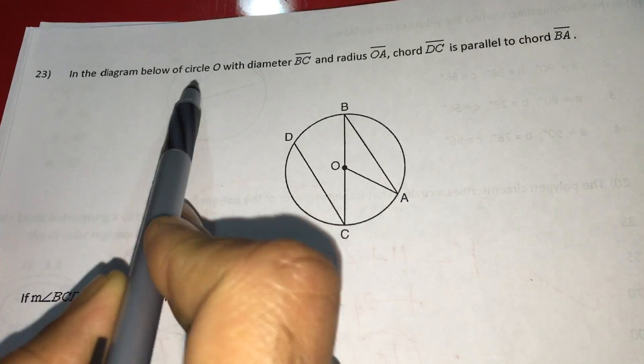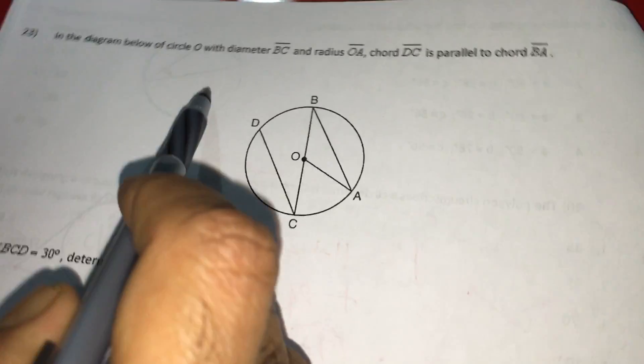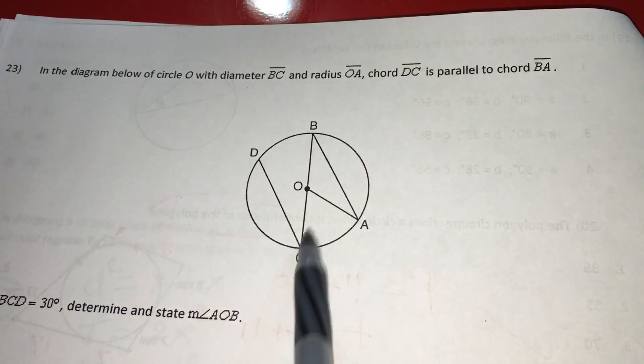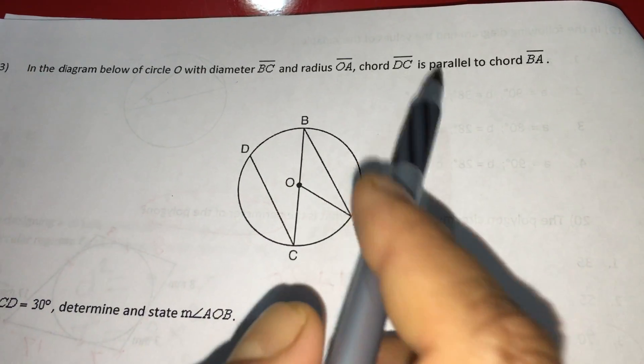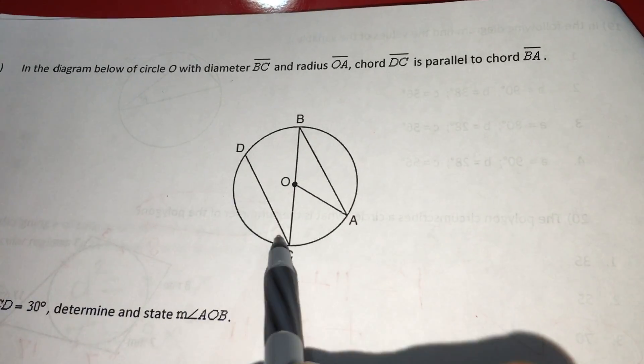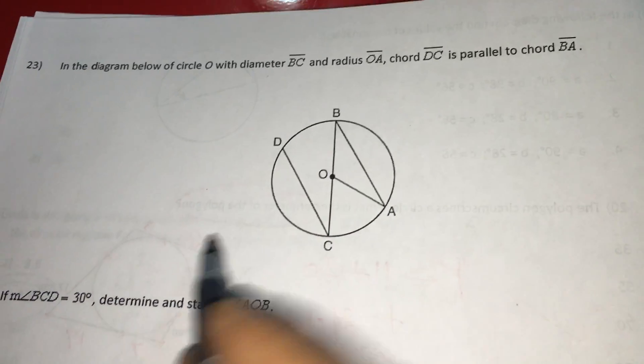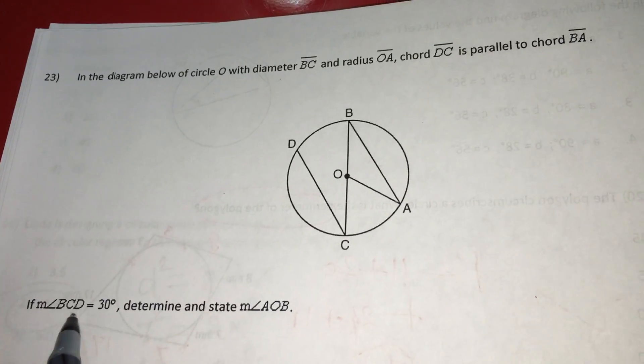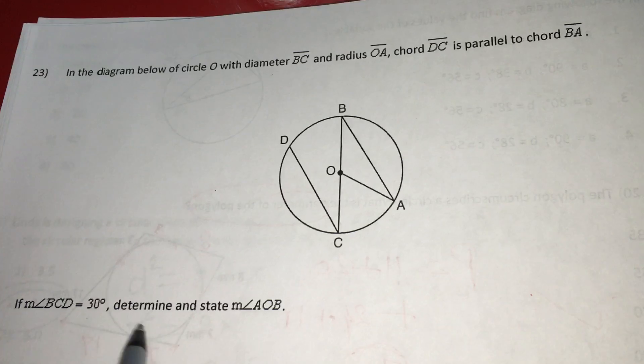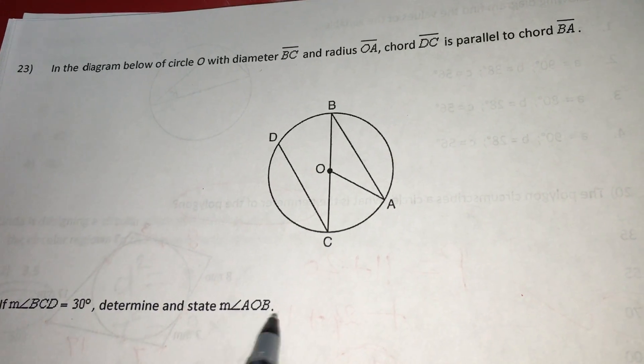In the diagram below of circle O with diameter BC and radius OA, chord DC is parallel to chord BA. Measure of angle BCD is 30 degrees. Determine and state measure of angle AOB.